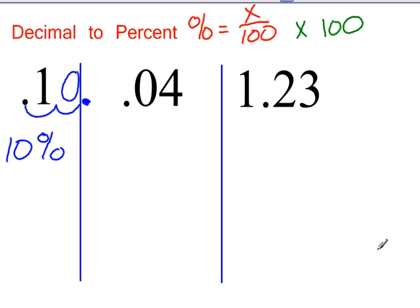For 4 hundredths, move the decimal over two places. That would be 4 percent.